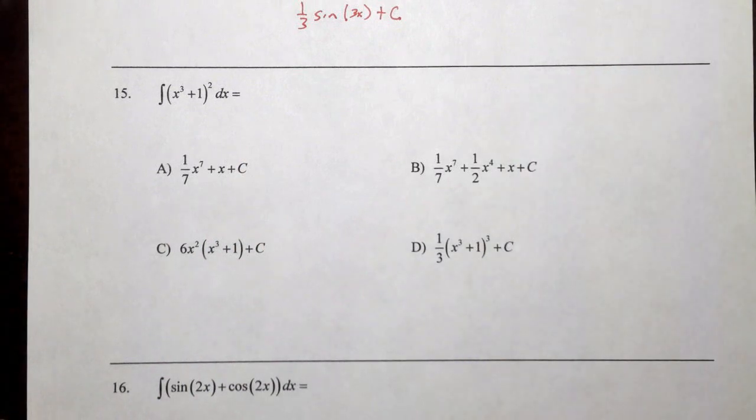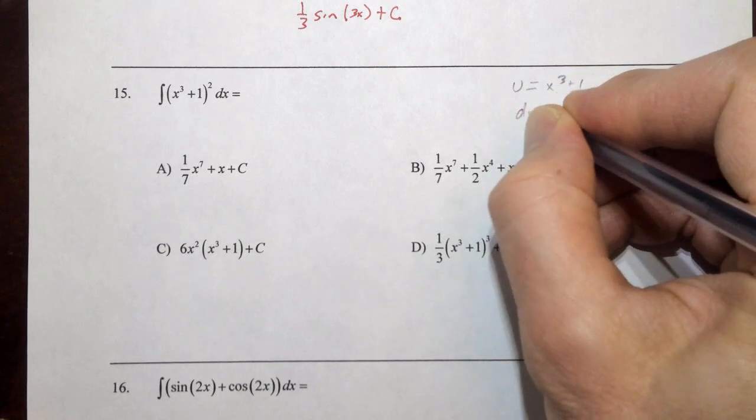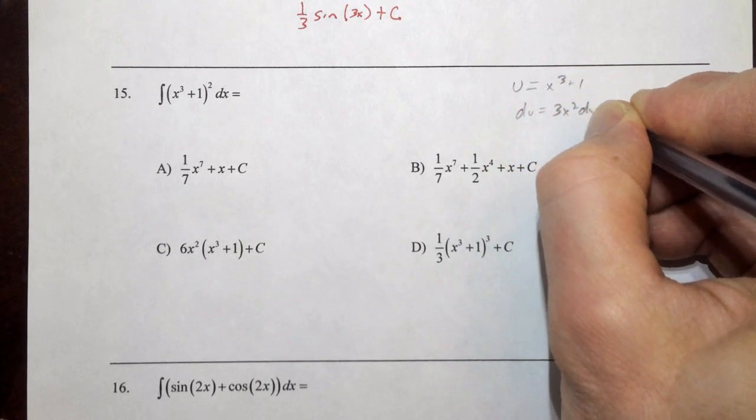So we're thinking, and I'm going to do this in pencil because it's actually not correct. We're thinking that u is x cubed plus 1, and du is 3x squared dx.